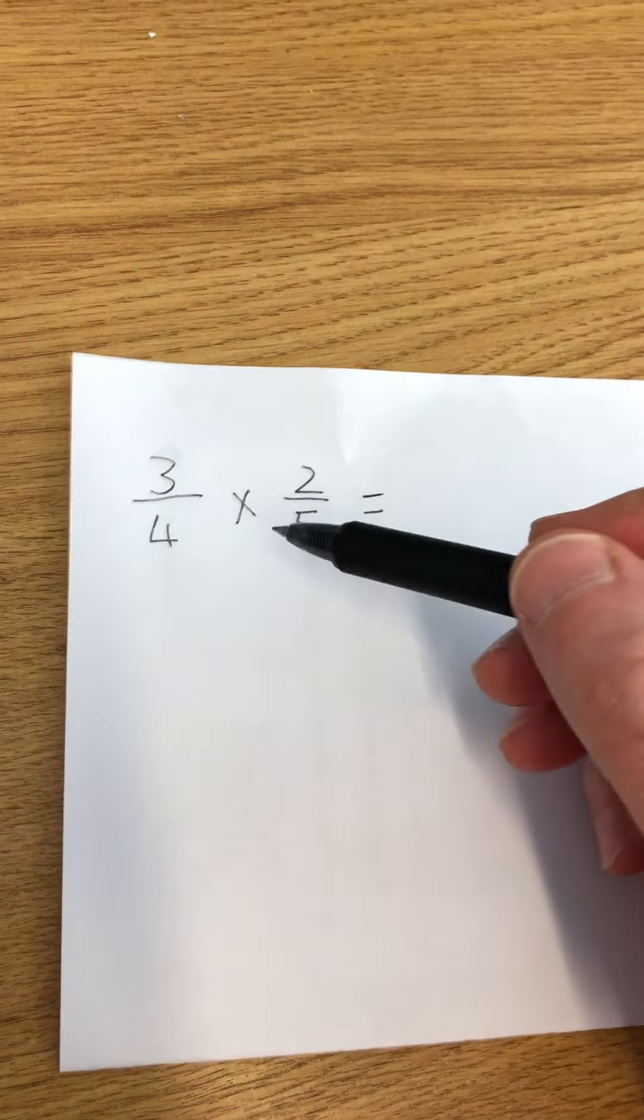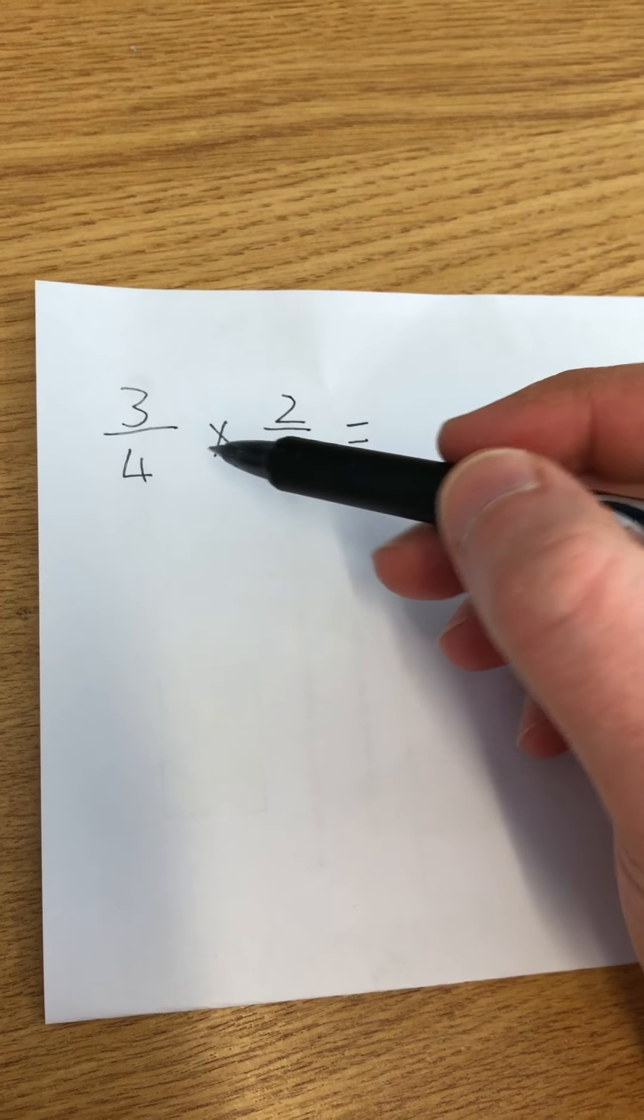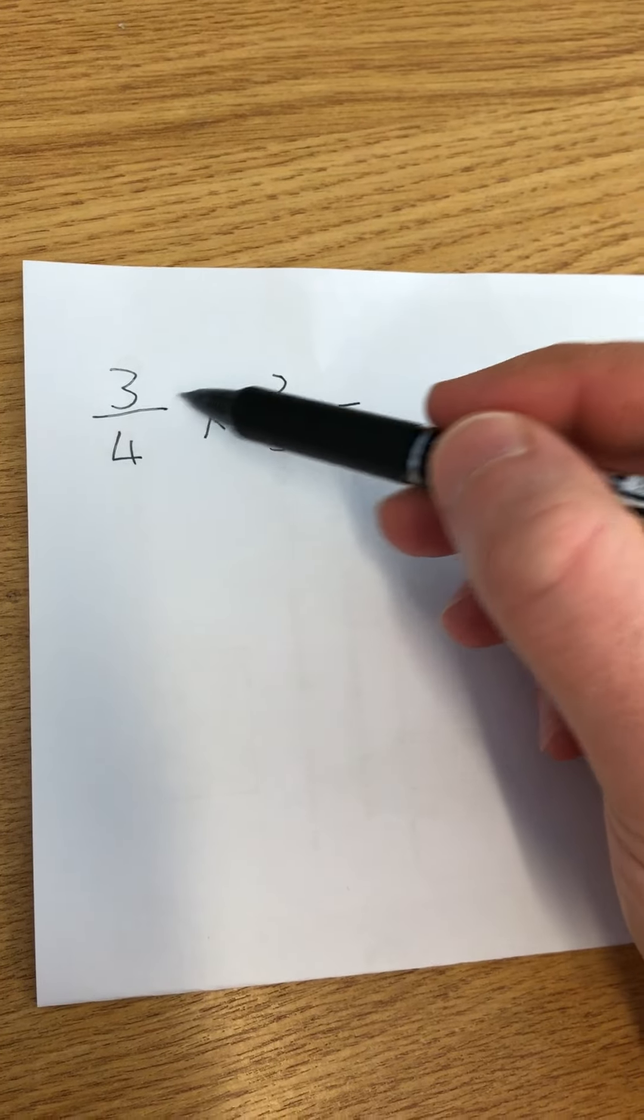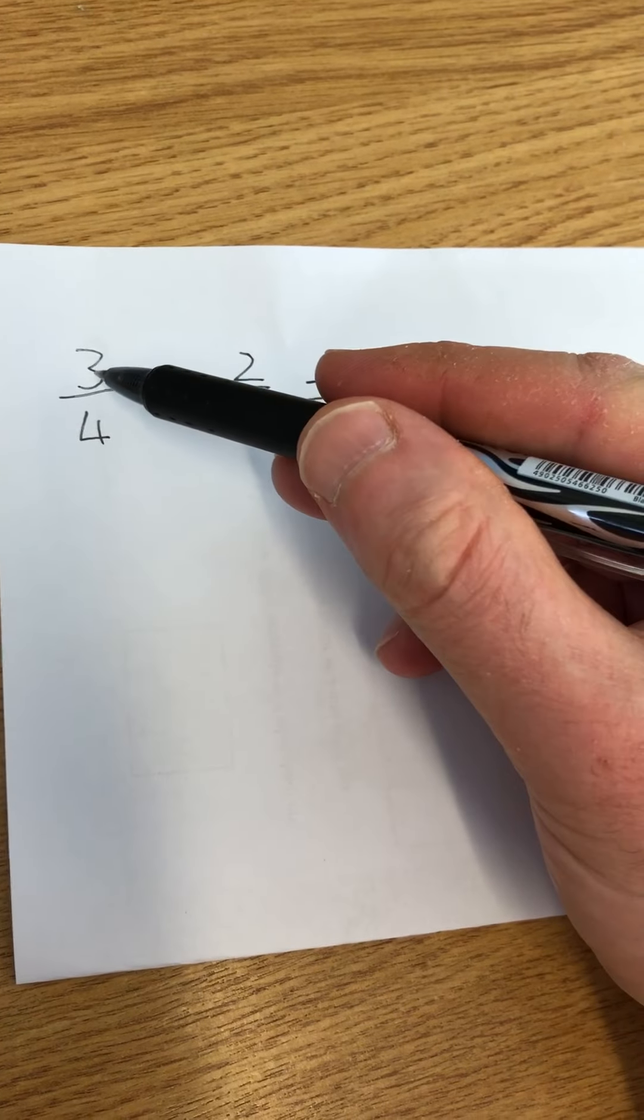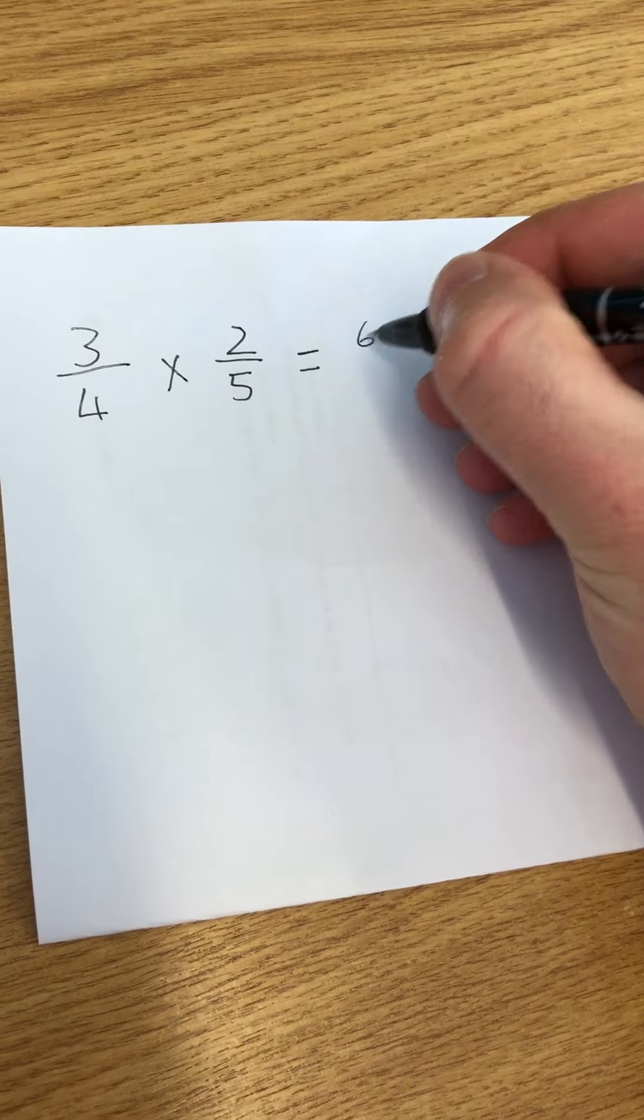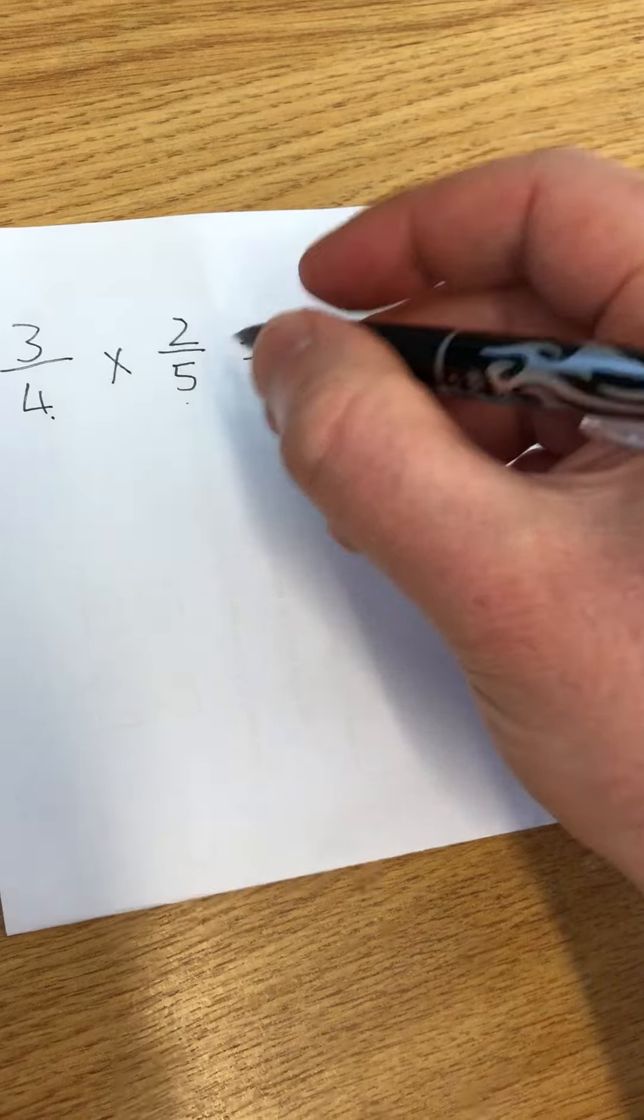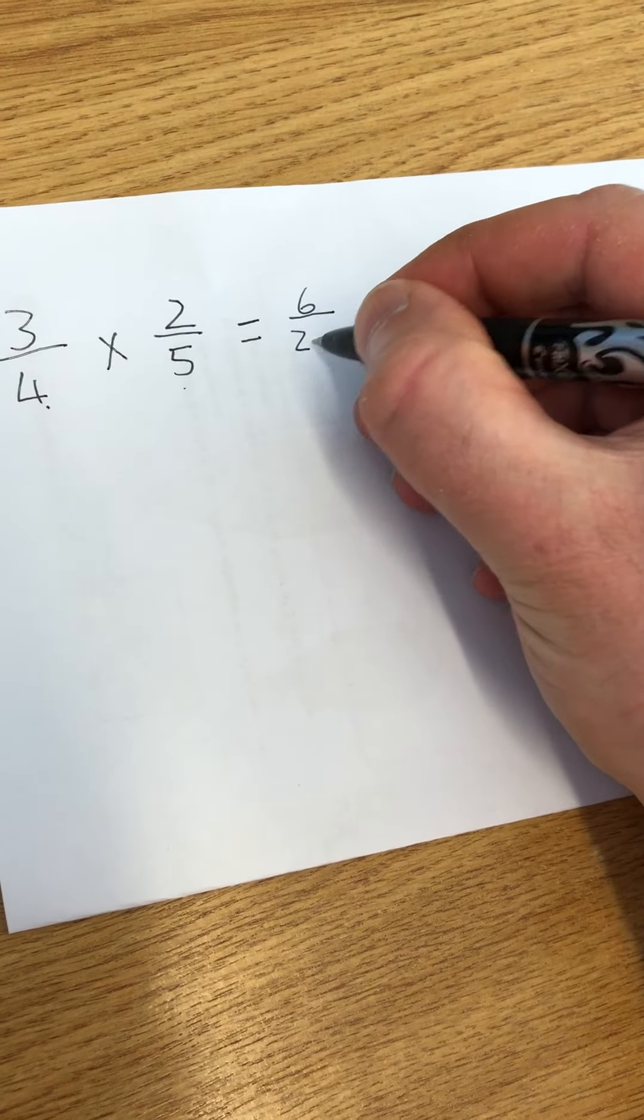All you have to do, it's much easier than adding fractions or subtracting fractions. If you're multiplying fractions, you just times across. So I do 3 times 2, which equals 6, and 4 times 5 equals 20.